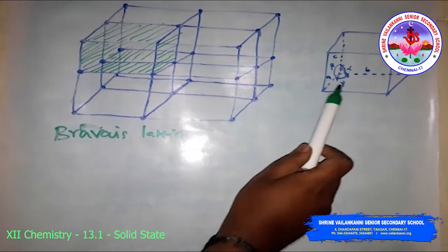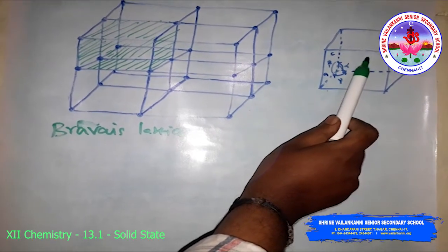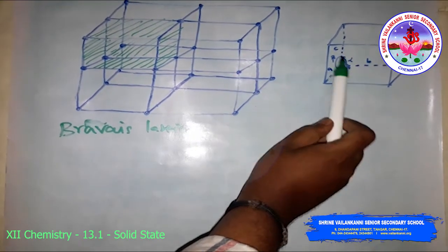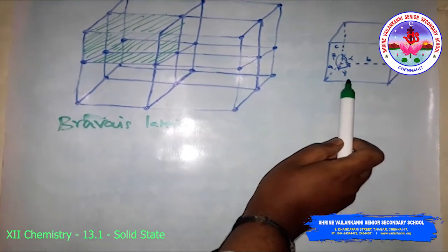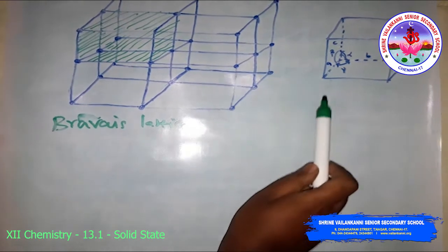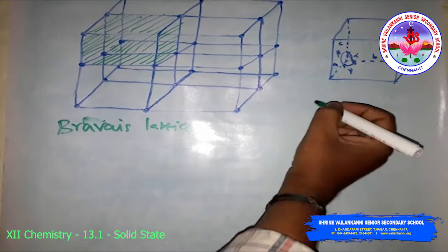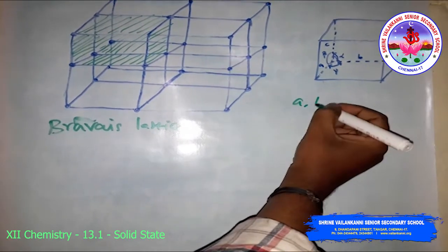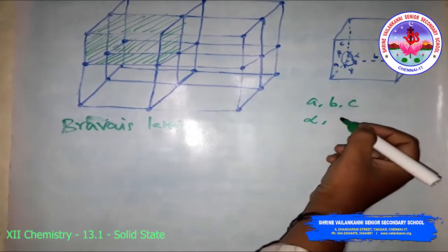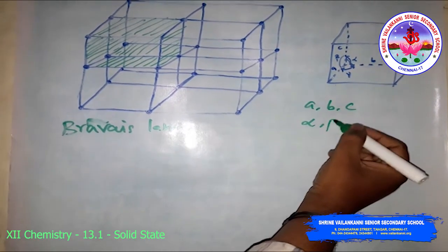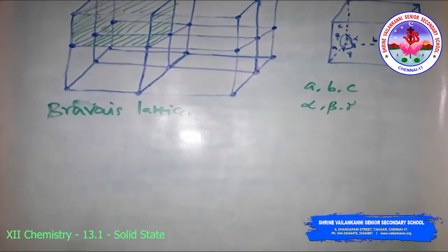Alpha is the angle between edges B and C, beta is between A and C, and gamma is between A and B. So the unit cell is characterized by six parameters: three edge lengths A, B, C, and three axial angles alpha, beta, and gamma.